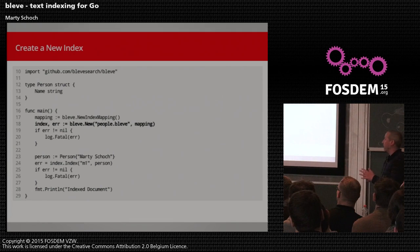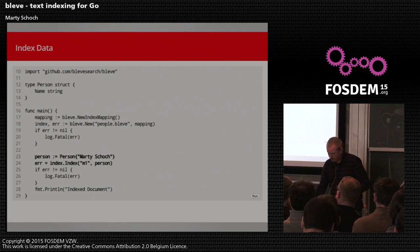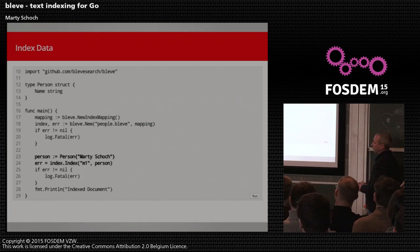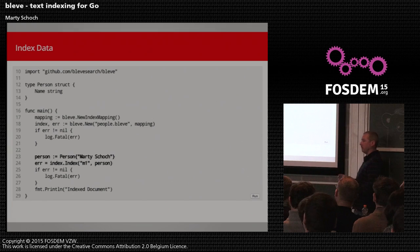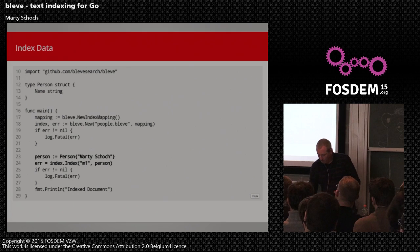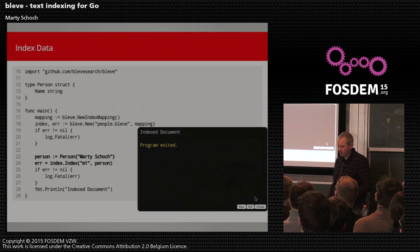On line 18 we open the index — or create a new index in this case — providing the path and a reference to the mapping. That returns either an index or an error. Once we've got the index open, we create an instance of that person struct with my name Marty Schock. On line 24 we invoke the index method: the first parameter is a unique identifier string for the document, the second is the instance. We can run this, and it gets to the end and prints out that it indexed the document. We now have an index with a single document.